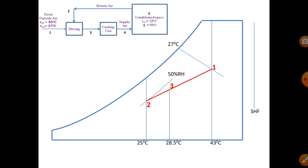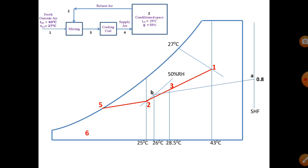On the SHF scale, mark point A at 0.8. Point B is the alignment circle at 26°C DBT and 50% RH. Join A and B, then draw a parallel line through point 2 — that is the line 2 to 5, which is the RSHF line extending to the saturation curve. Then draw one line through point 3 to the ADP temperature, which is the cooling coil temperature.